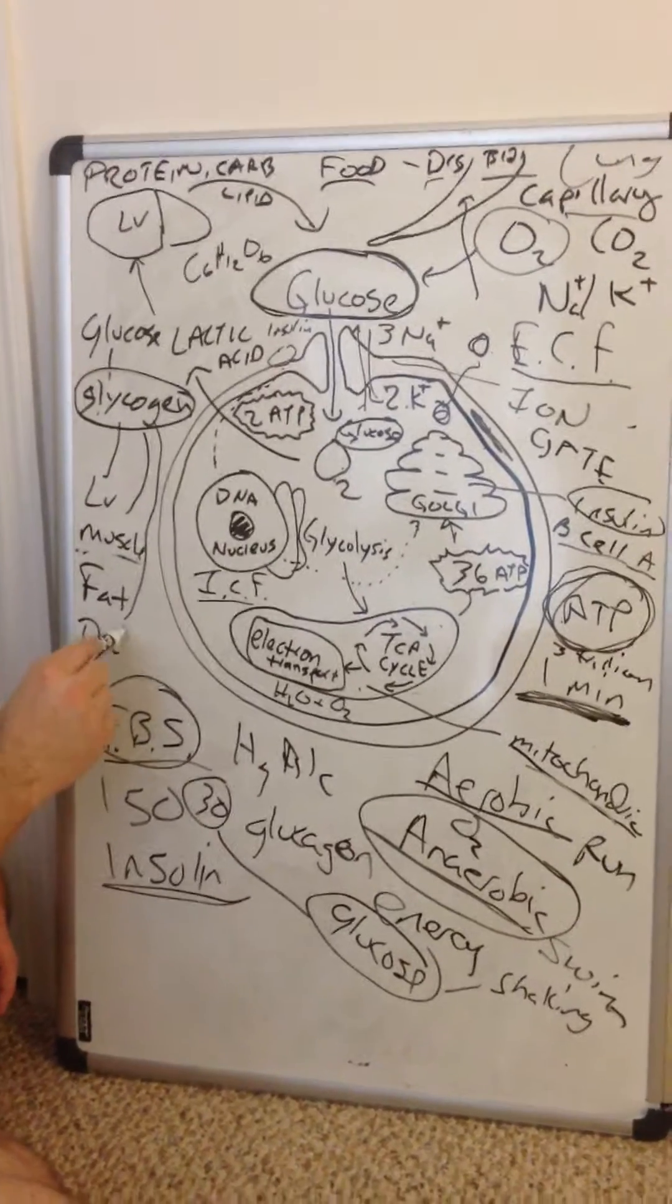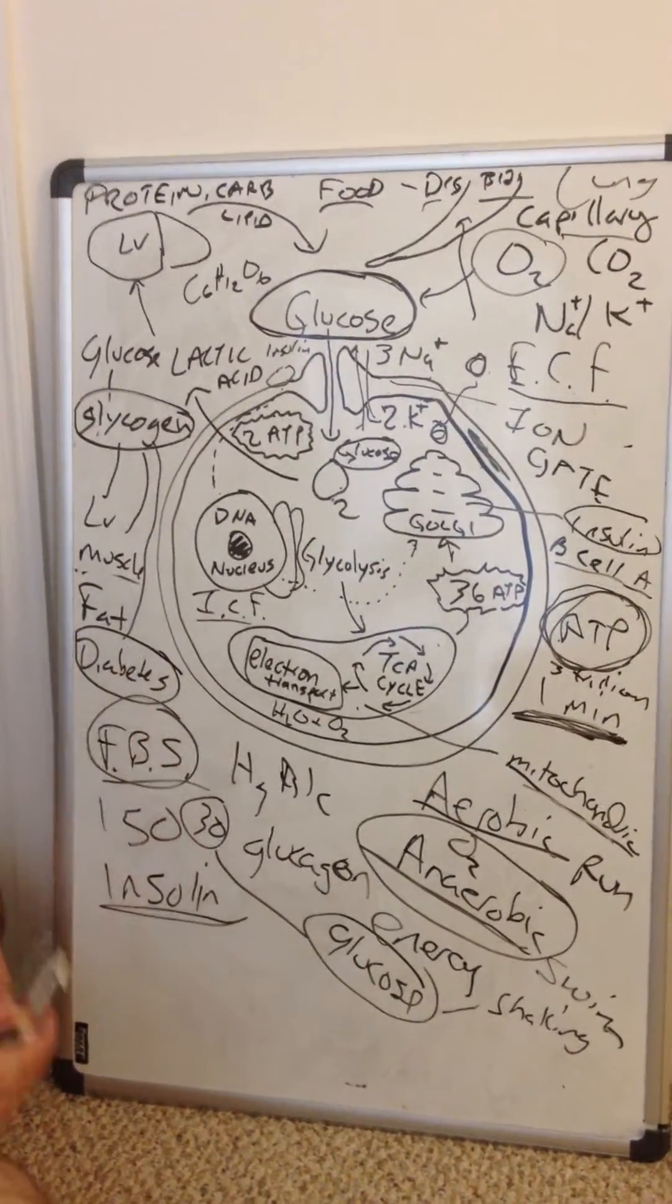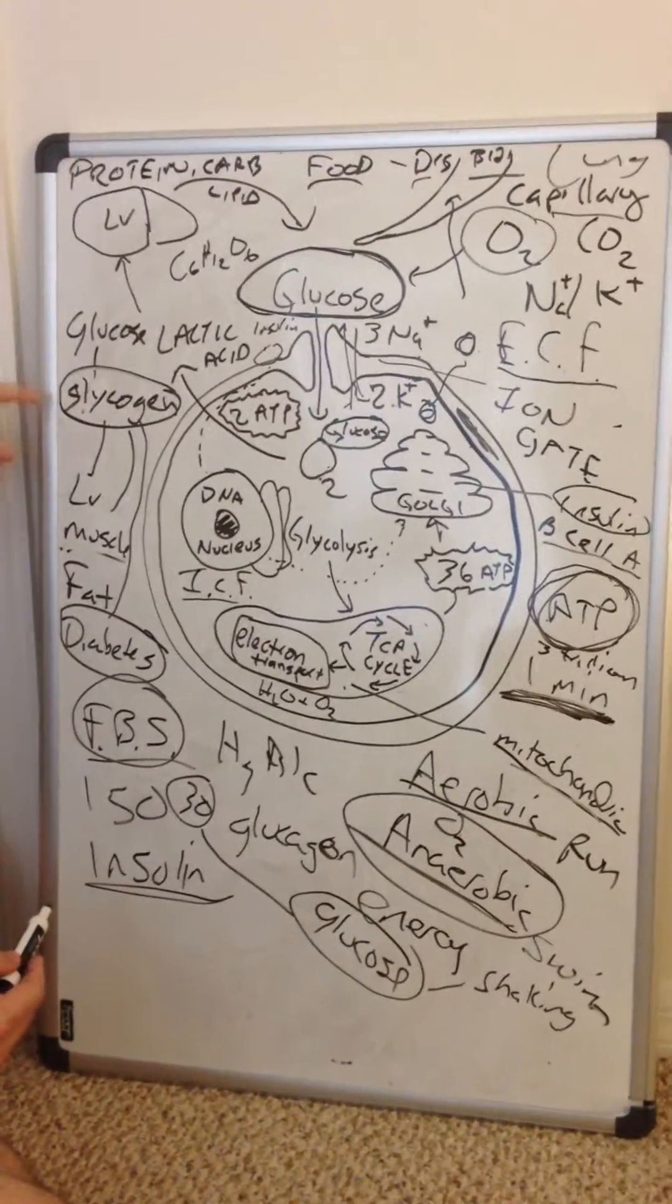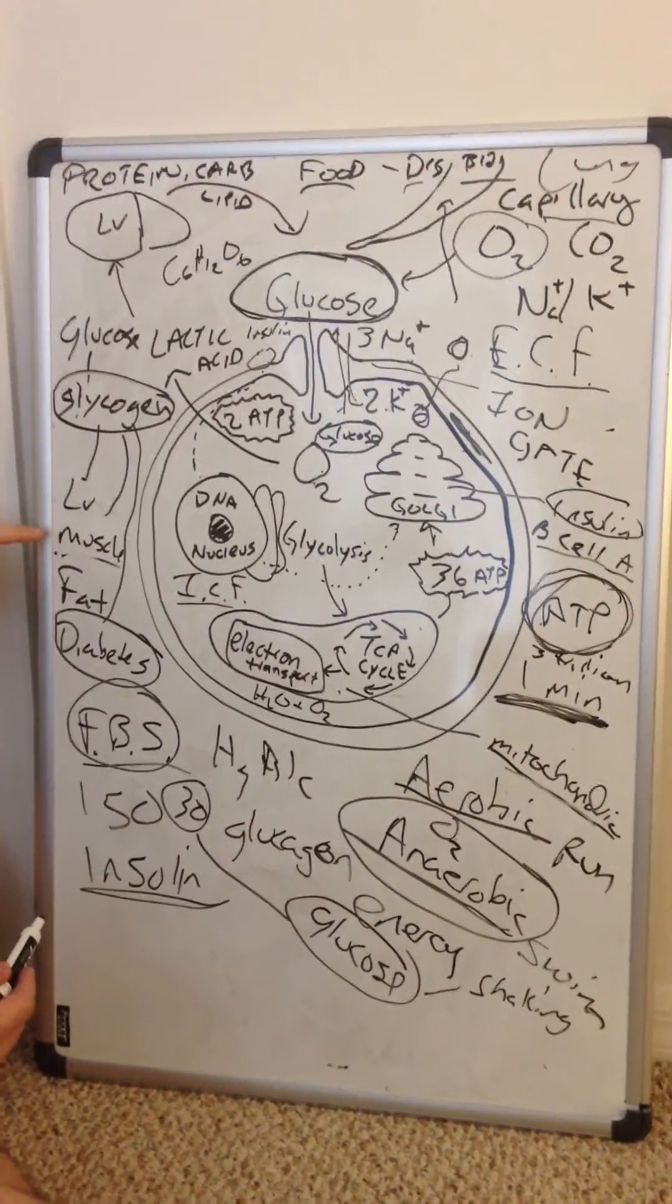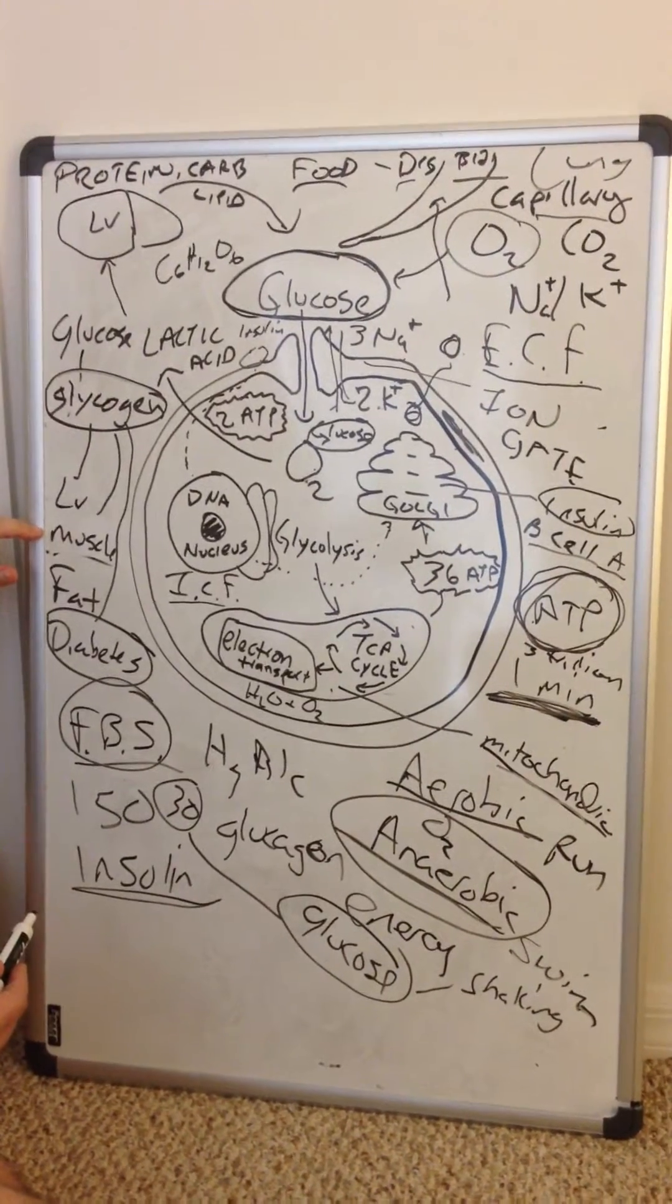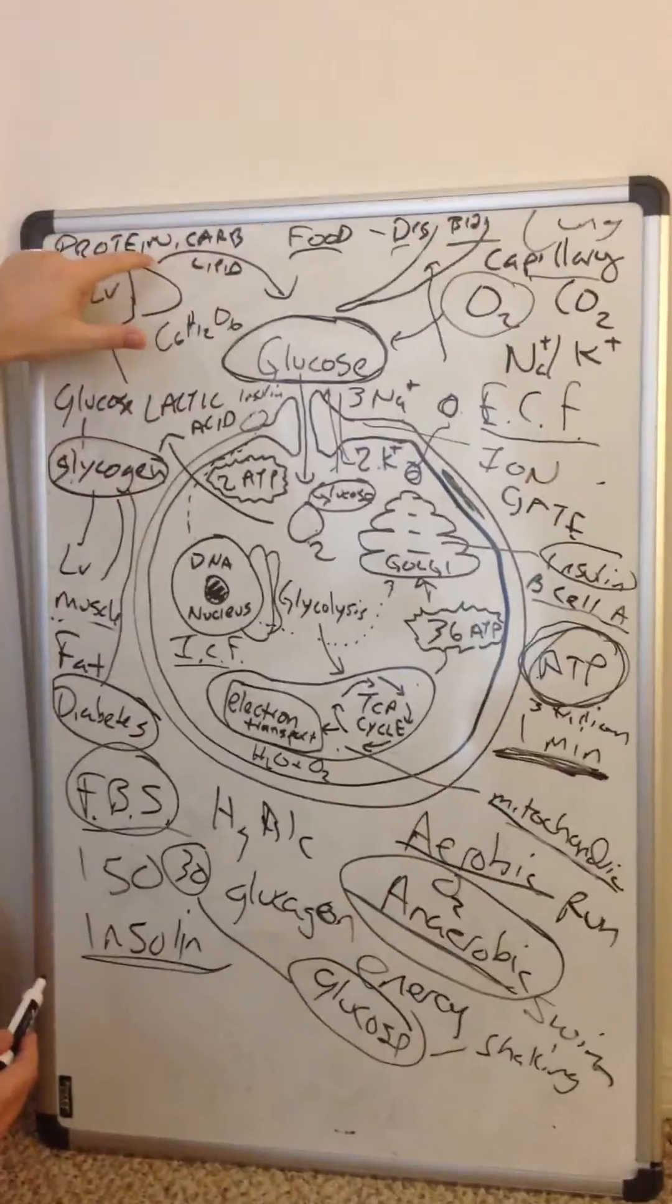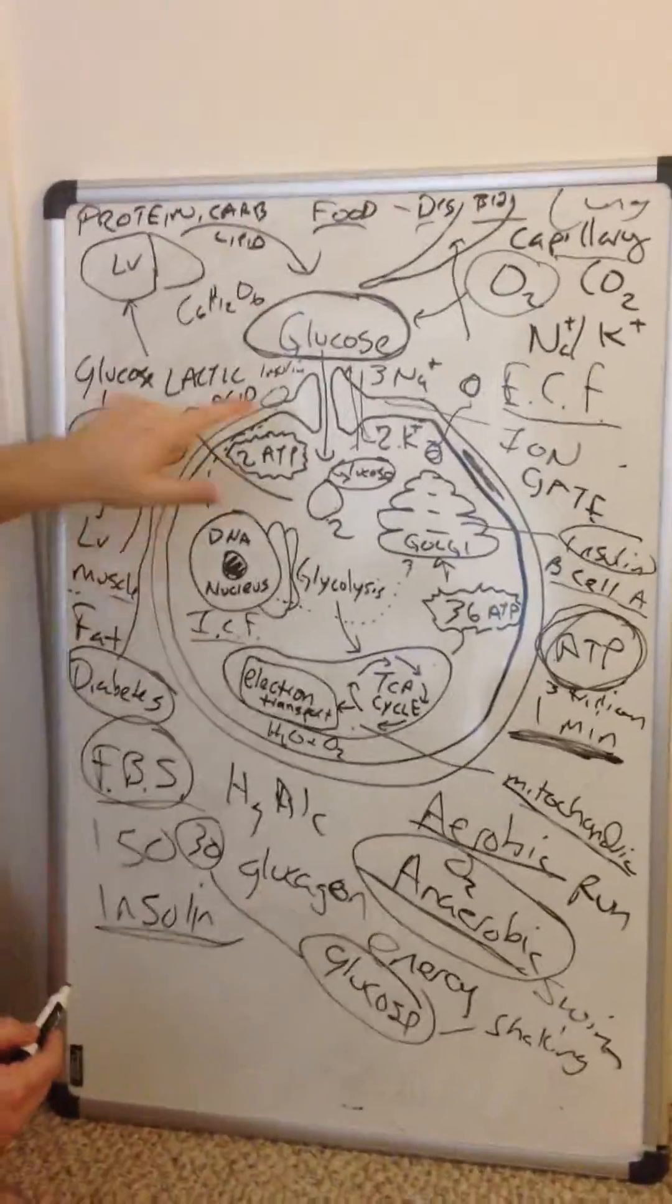So diabetes, in a sense, is an excess of too much glucose and we're not storing it properly or not burning it off properly. Why is exercise so important when we're diabetic? Because the muscles, which use lots of glucose, will burn our excess glucose that we've taken in via the digestive system too much. We will burn it off.